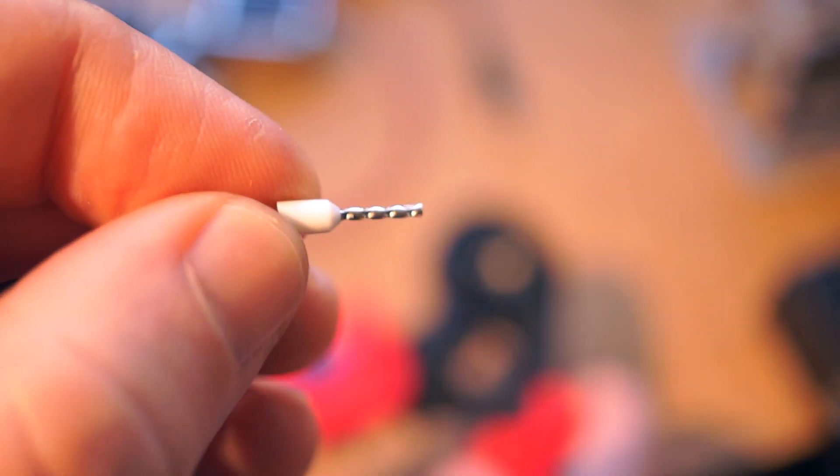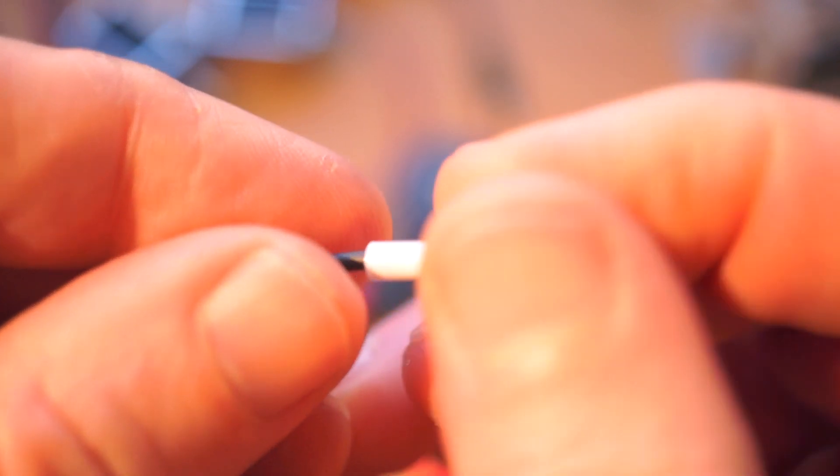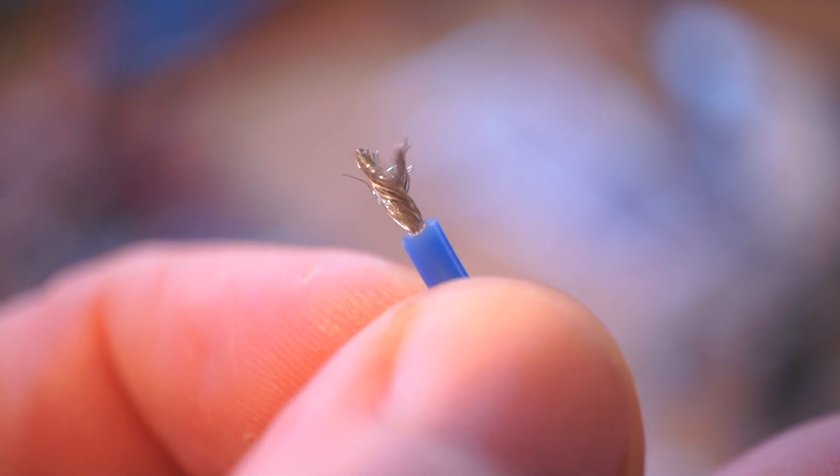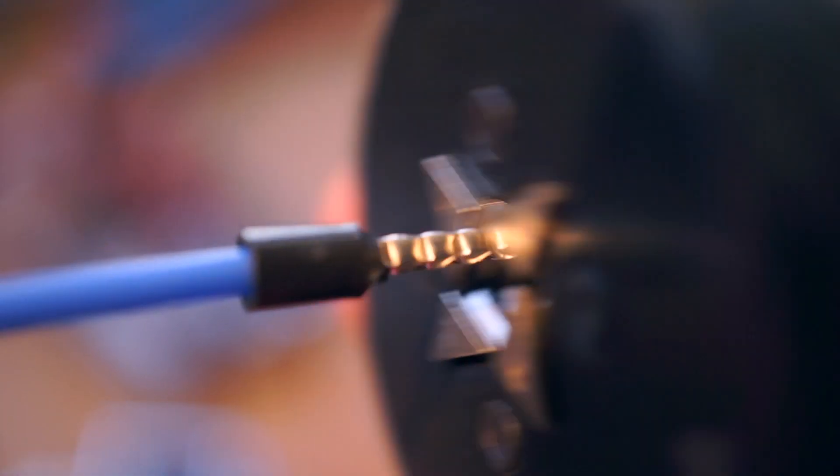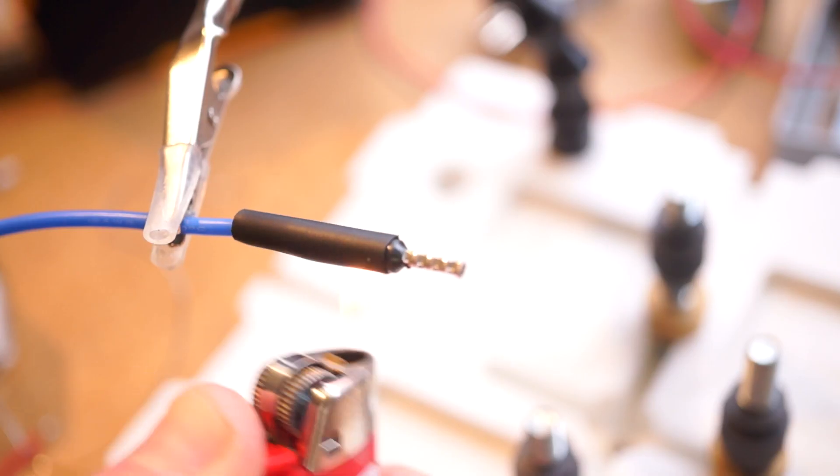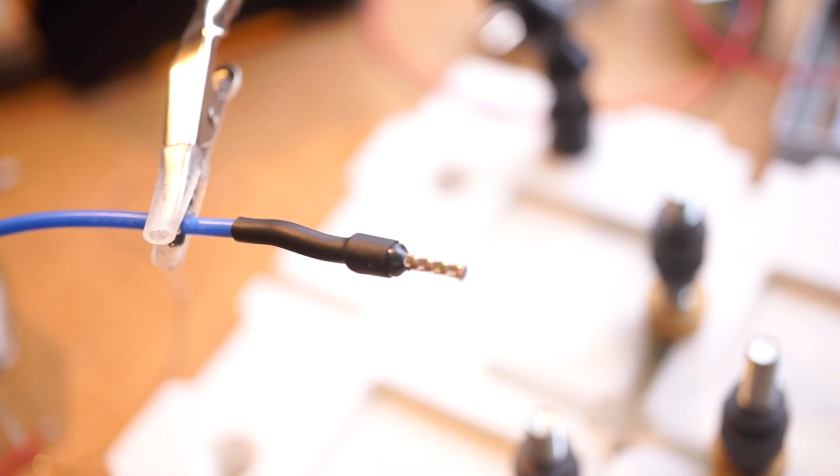Crimping a ferrule on the end of your stranded wire solves two main problems. First, it wrangles all the strands together. The insulated hood at the base of the ferrule also keeps any strays from making their way out. For a little extra insurance, you can run some heat shrink over the whole thing.